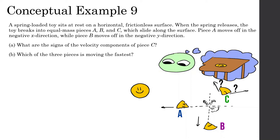A spring-loaded toy sits at rest on a horizontal frictionless surface. When the spring releases, the toy breaks into three equal pieces A, B, and C, which slide along the surface. Piece A moves off in the negative x direction, while piece B moves off in the negative y direction. What are the signs of the velocity components of C? We should know the toy sits at rest, so at the very beginning momentum initial equals zero. After they spring apart, one is going left and one is going downward.